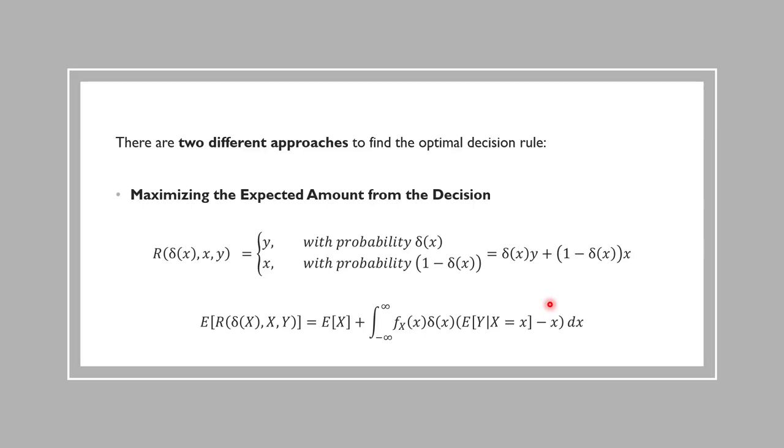In the second approach, we focus on maximizing the expected amount from the decision. We define a gain function, R, which simply models what the player will end up in different conditions defined by delta.